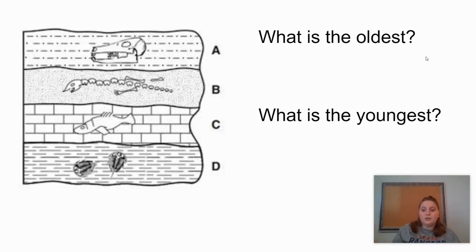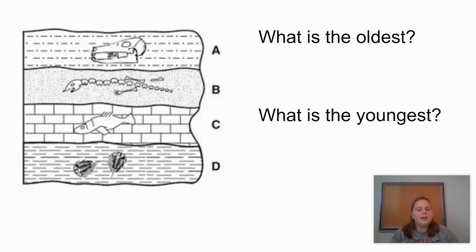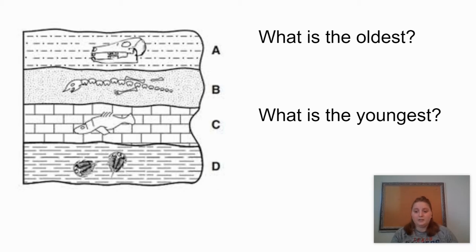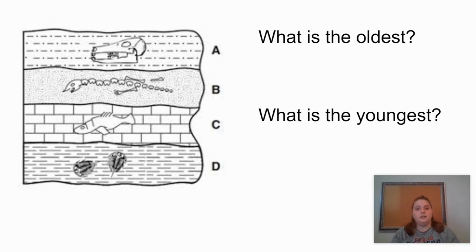So let's do a few practice questions and then look at a more difficult problem. Here I have a picture — looks like I've got a skull, a skeleton, then in rock layer C I have a fish, and in D I have an animal called a trilobite. Really old animals — they kind of look like horseshoe crabs, they've been around for a very long time. So which rock layer and fossil is the oldest? The answer is going to be D.